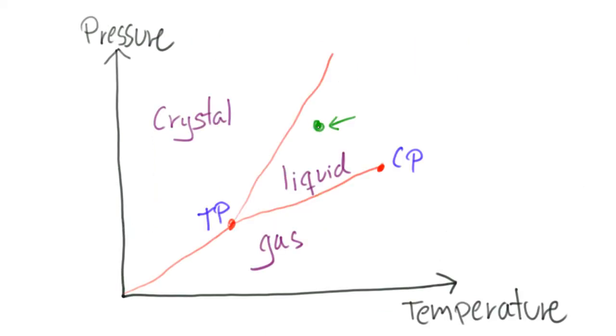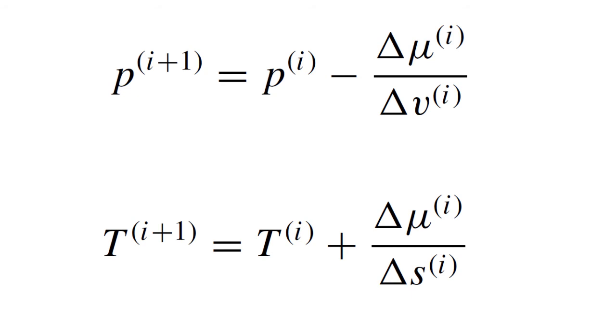We can either follow an isotherm or an isobar. Along an isotherm the next pressure in a series of iterations is given by the upper equation. The lower equation gives the temperatures along an isobar.